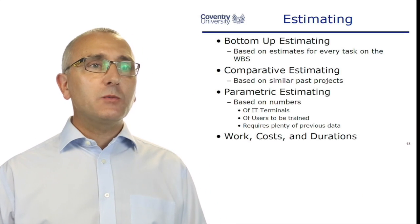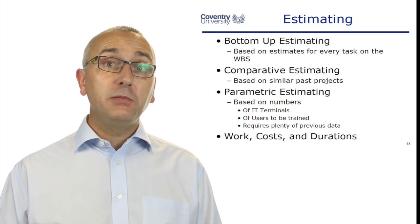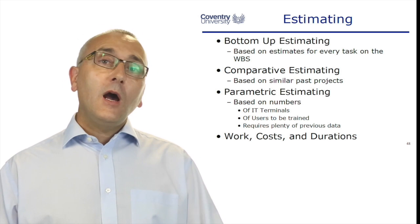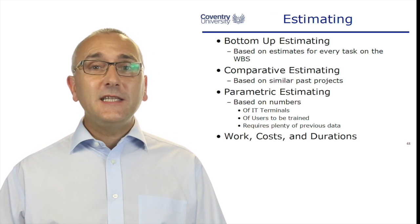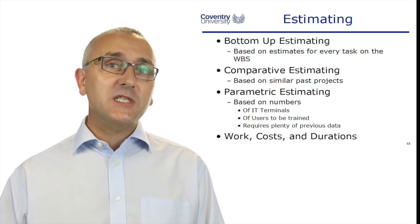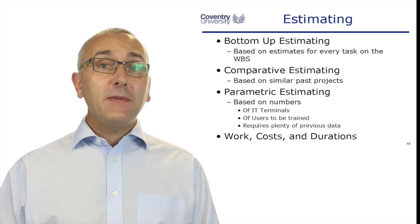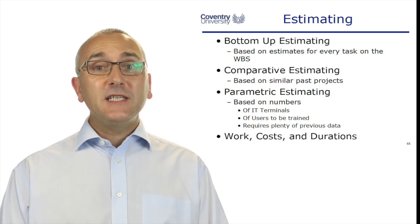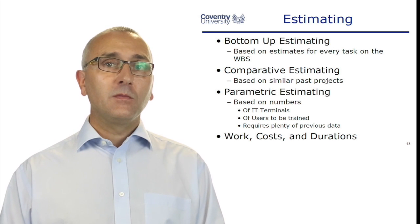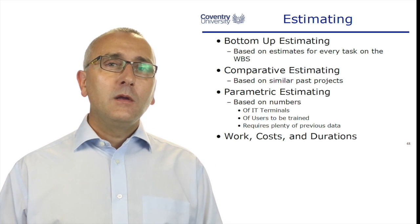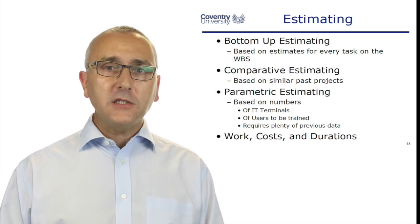How do we estimate these things? There are three main ways. Bottom-up estimating is where we look at every task on the work breakdown structure to build up the total from the bottom. We can do that using comparative estimating, looking at past projects — a similar project for another customer of the same size and environment. Or parametric estimates, where you say if I put in 10 terminals it costs this much, so 100 terminals will cost 10 times that. Some industries have typical schedules or books where you can look up how long it takes to install lighting in a new building, for instance.